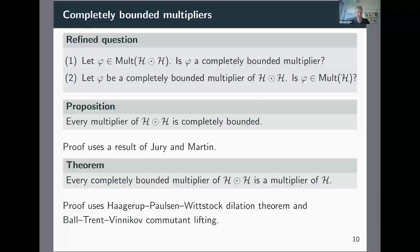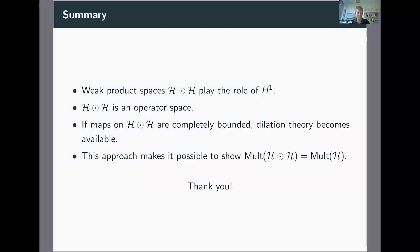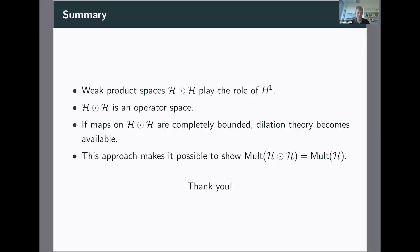In summary: weak product spaces should be thought of as playing the role of H1. They have an operator space structure, meaning you can define norms on matrices with entries in your weak product space. When you study operators on this weak product, it's useful to look at what they do at the higher matrix level — not just at the ground level but also at large N. In particular, if you find that your map is completely bounded, then you unlock new tools: you unlock dilation theory. Using this approach, you can show under a suitable hypothesis that these multiplier algebras are the same.